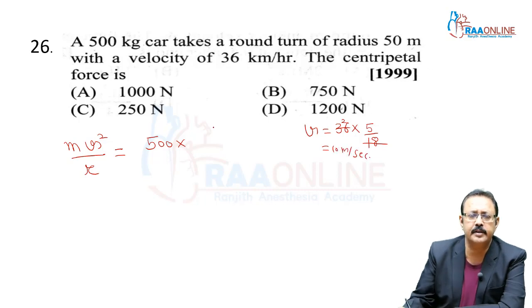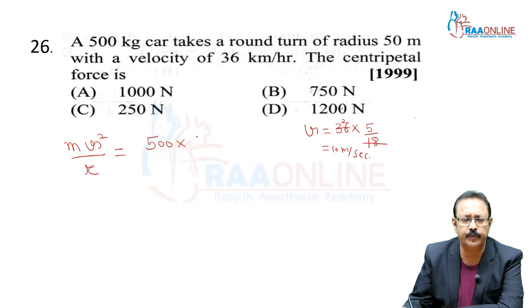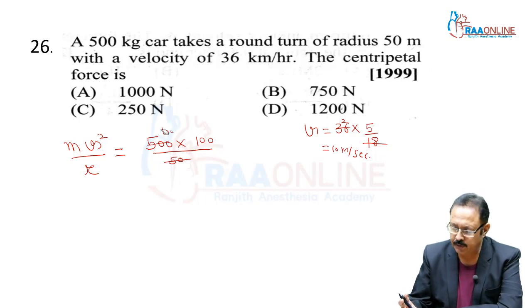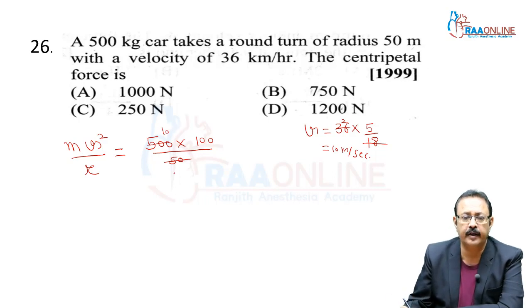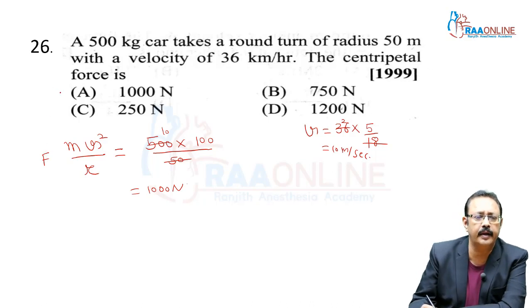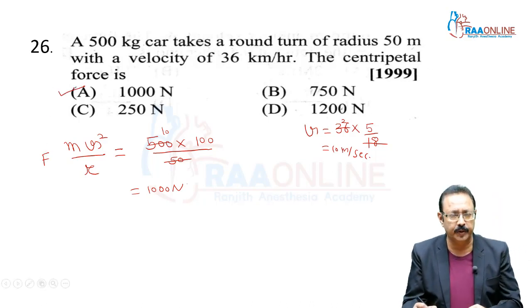Centripetal force = 500 × 100 / 50 = 1000 newton. So we are going with option A, 1000 newton.